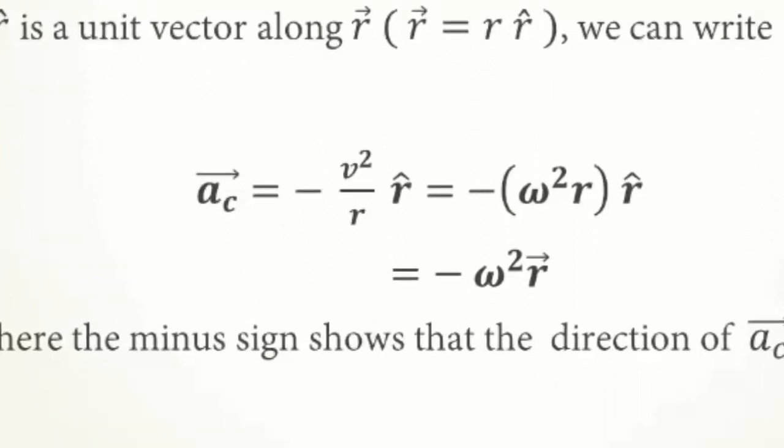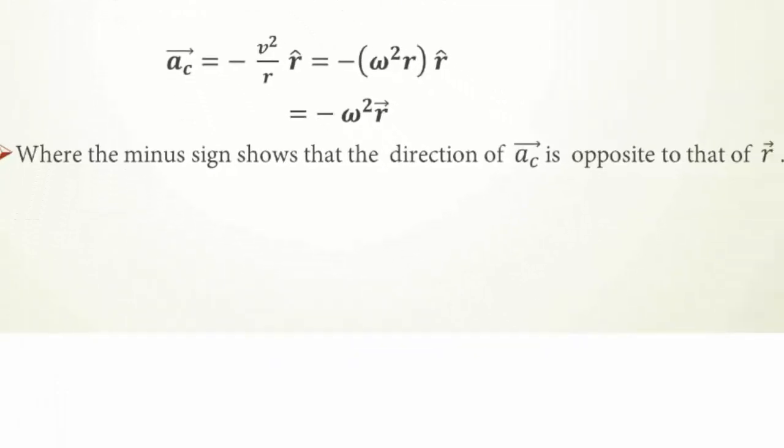In vector notations, we can write it as minus V square by R into R cap or minus Omega square R into R cap, where R cap will be a unit vector along R. Therefore, it is clear that the centripetal acceleration has a direction opposite to the radius vector.